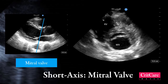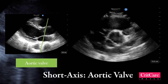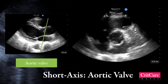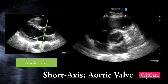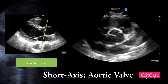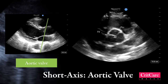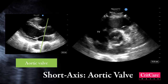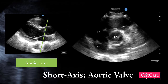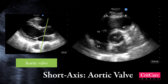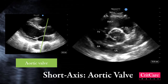The next view is obtained by further fanning of the probe. This is at the level of the aortic valve, which shows a circular shadow in the center with its three leaflets. The tricuspid valve is adjacent to the aortic valve, and the right atrium is seen next to the tricuspid valve. The left atrium is adjacent to the right atrium. The pulmonic valve and the right ventricular outflow tract are seen in the near field.